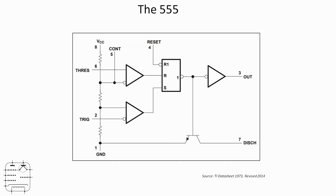Those two comparators feed into the reset and set of a standard SR latch. We've got access via pin 4 to the reset, and the output goes to an inverter and then to the output. The output is actually taken from the Q-bar side of the SR latch — the inverted side — so that we have the ability to control the discharge transistor whilst the output is high. The inverter sends the output high while that's going on, and that transistor at the bottom does the discharging of the external capacitor that controls the frequency.